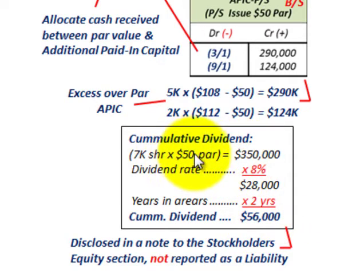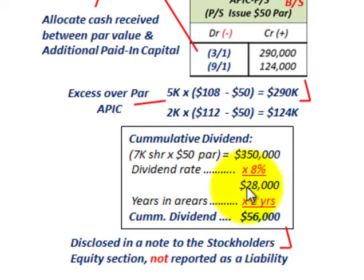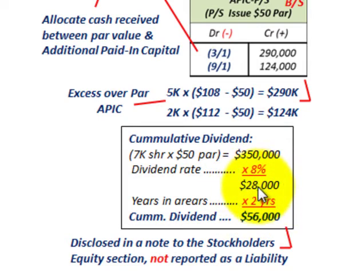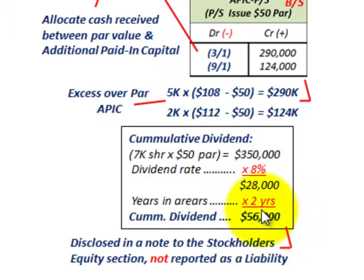To summarize: take the par value of the stock times the shares outstanding, then apply the eight percent annual dividend rate to get the annual accumulated dividend. For any years owed, multiply by the number of years — in this case two — times twenty-eight thousand gives fifty-six thousand total cumulative dividend.